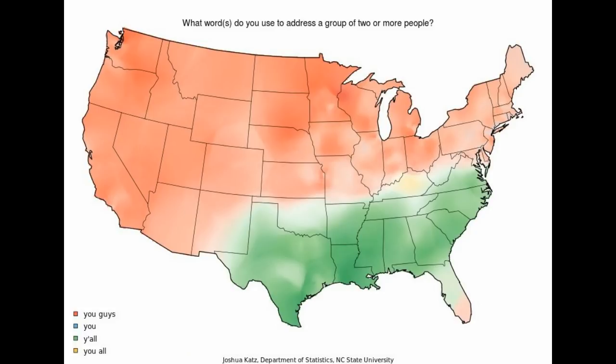What words do you use to address a group of two or more people? The red is 'you guys,' blue is 'you,' green is 'y'all,' and then Florida is 'you all.' Crazy old Florida.